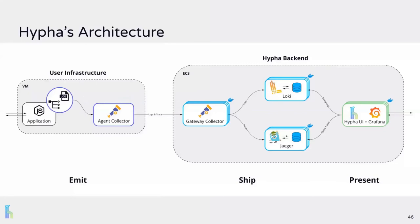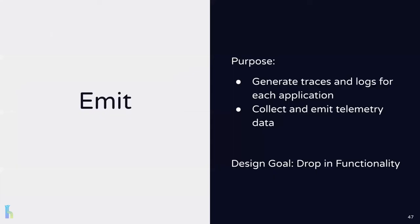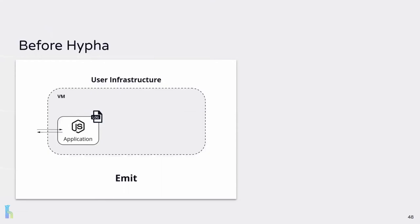Recall the three phases of the telemetry pipeline — emit, ship, and present. Within each phase of Haifa's architecture, we chose specific tools and configurations. Let's start with the emit phase. Haifa needs to generate traces and logs for each application and collect and emit telemetry data, while being drop-in and unobtrusive to existing application code and logging tools. That means there shouldn't be any code changes to existing services, manual setup, or complex configuration.